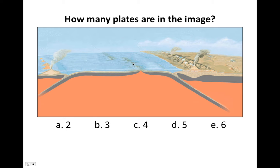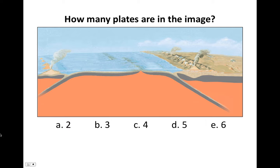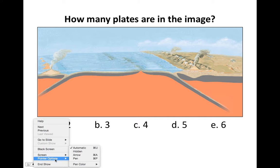Up here is a second plate boundary. This is a mid-ocean ridge, where new oceanic lithosphere is created and the plates move away from that ridge. A mid-ocean ridge where the plates move away from the ridge — so that is one plate, this is two plates.